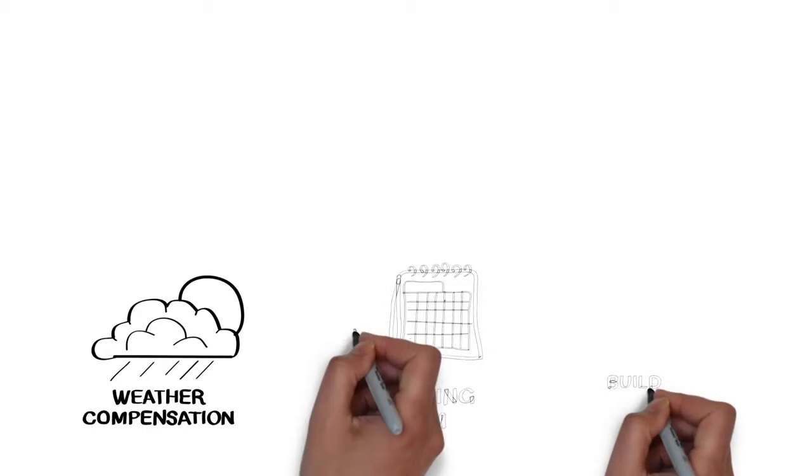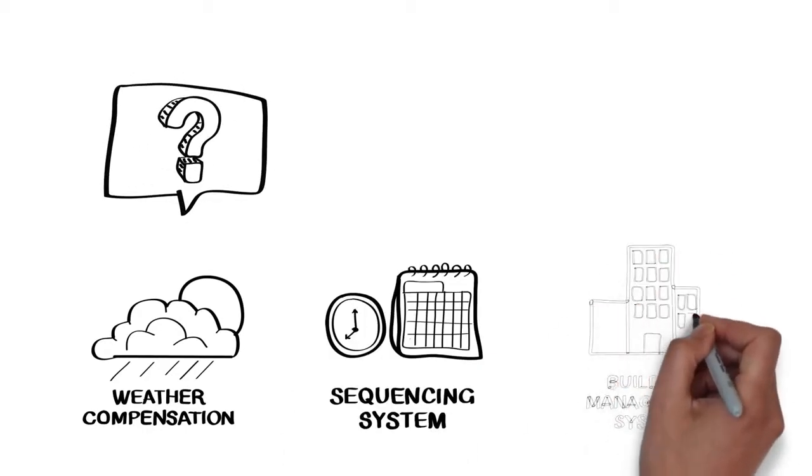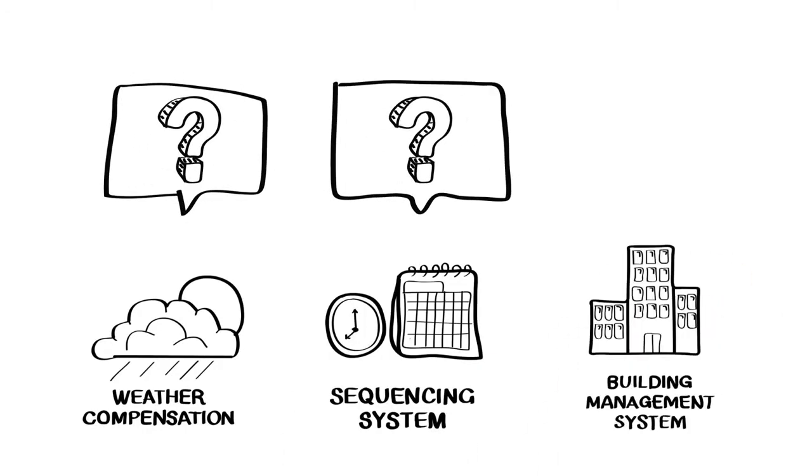Perhaps you've already invested in the BMS weather compensation system or sequencing system. Surely that does what the M2G does. Well, BMS systems typically cannot identify dry cycling where M2G can. How?